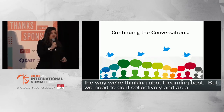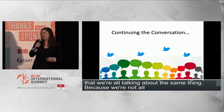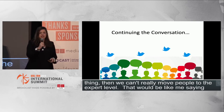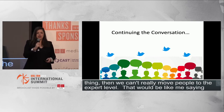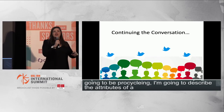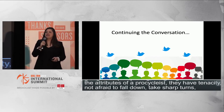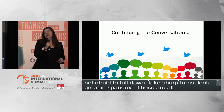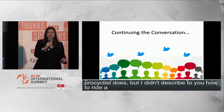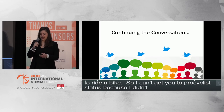If we're not all talking about the same thing, we can't really move people to the expert level. That would be like saying we're going to do pro cycling and I describe the attributes of a pro cyclist — they have tenacity, they're not afraid to fall down, they take sharp turns, they look great in spandex — but I didn't describe how to ride a bike. I can't get you to pro cyclist status because I didn't explain that first piece. As a community, we need to think about learning first in order to move people toward expert learning.